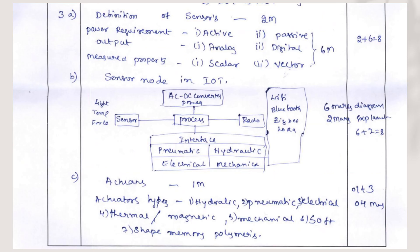Moving into the scheme: the definition of sensor carries 2 marks. For the power requirements, when you list down all those requirements and explain each in one line, that carries 6 marks — don't just list them, explain in one or two lines to add more value. That is 6 marks and 2 marks, totally contributing to 8 marks. For the sensor node in IoT, you will draw the architecture and explain each component — that is 6 marks and 2 marks for explanation, totally 8 marks.